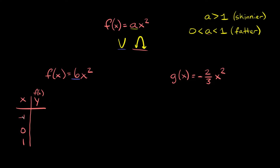Plugging in negative 1, we have 6 times negative 1 squared. For 0, we have 6 times 0 squared. And for positive 1, we have 6 times 1 squared. Negative 1 squared is positive 1, so 1 times 6 equals 6. Zero squared is 0, so 0 times 6 is 0. And 1 squared is 1, so 1 times 6 equals 6.